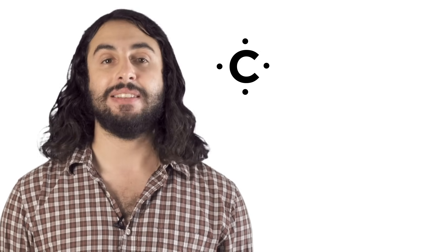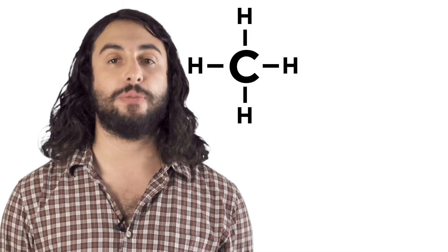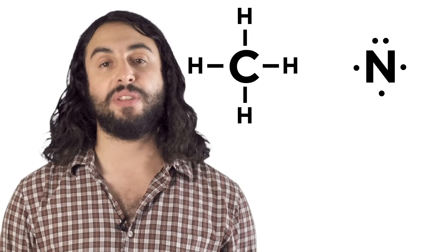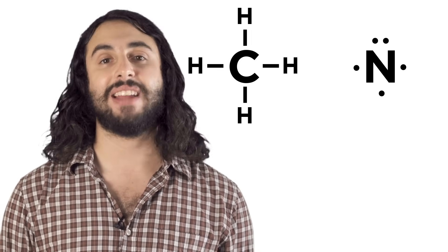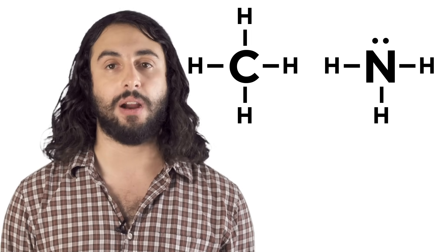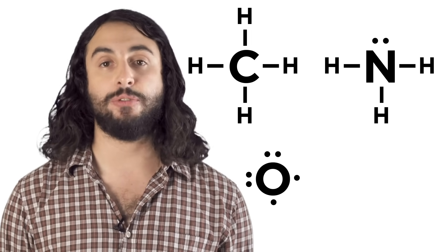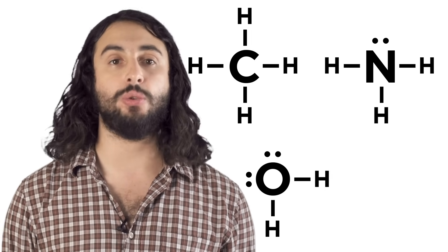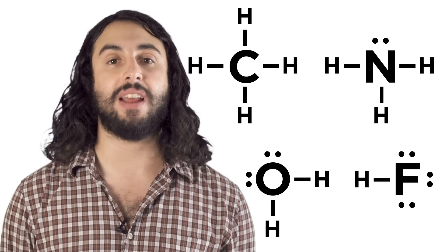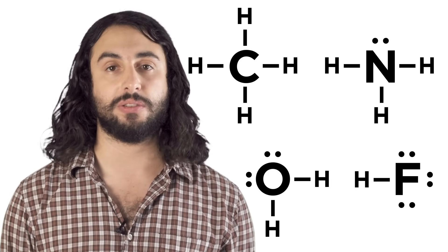The number of valence electrons an atom has dictates how many bonds it tends to form. Carbon likes to make four bonds. Nitrogen, with five valence electrons, likes to have three bonds and one lone pair. Oxygen likes to have two bonds and two lone pairs. And fluorine likes to have one bond and three lone pairs.